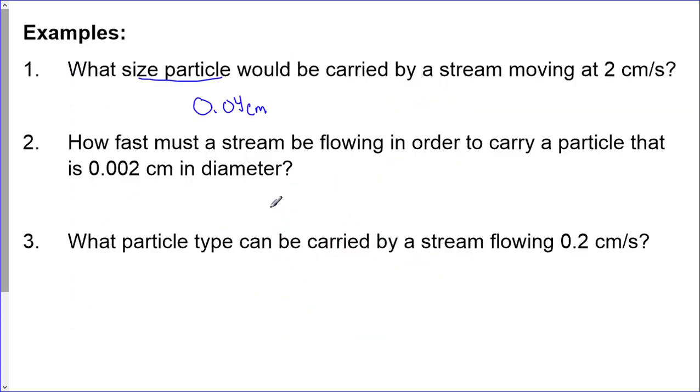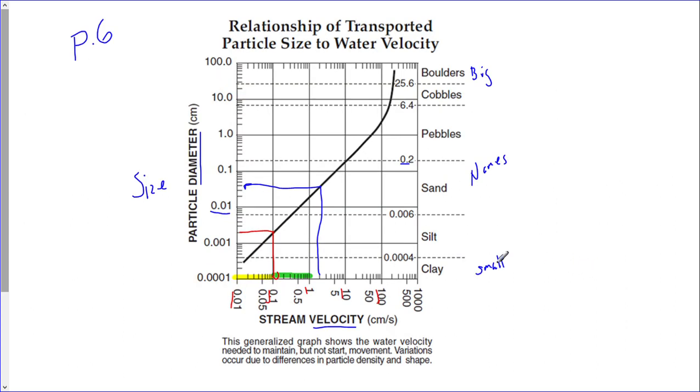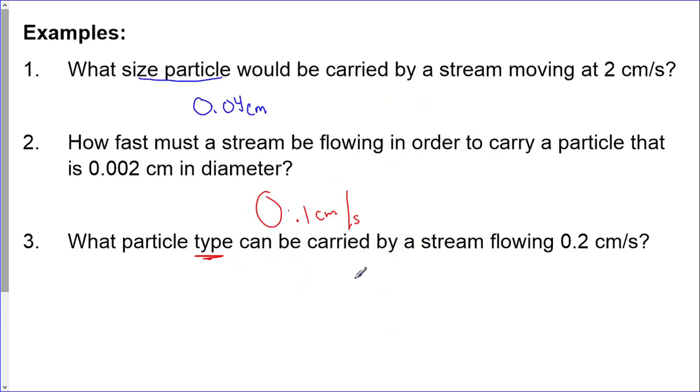And then finally, what particle type, so now I want the type meaning the name, can be carried by a stream flowing at 0.2 centimeters per second? So 0.2, here is 0.1, this is 0.2. So now I'm going to come up to here and I hit right there. So now I'm in between this space here, so that particle size is going to be silt. So that's the particle type.